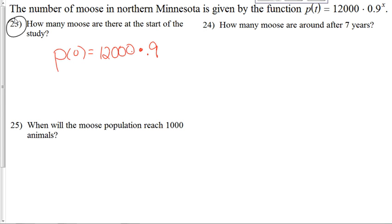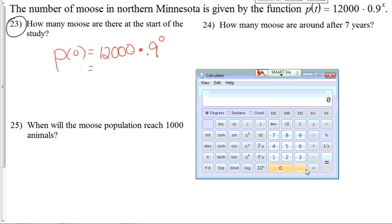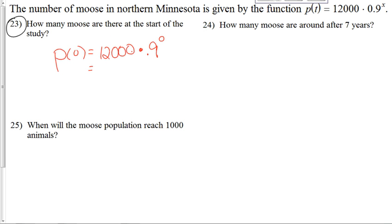P(0) equals 12,000 times 0.9 to the 0 power. And a lot of people will right away think that's 0 and get you 0 for an answer. But if we do that in a calculator, 0.9 to the 0 power is 1. Anything to the 0 power is 1. So it's important that you see that. So when we do this problem, it's 12,000 times 1 or 12,000. Now this is in context, so let's make sure we write down what we have here. 12,000 moose.